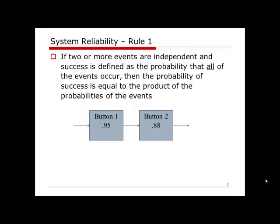Why is it called a serial structure? For such a structure, it's just like I need to deliver water to my destination, maybe my sink or a bucket. I need two pipes connected to each other to deliver the water. If either one of these two pipes is broken, then I cannot deliver the water to my destination, which means the system will fail. So the system reliability depends on the success of all components.